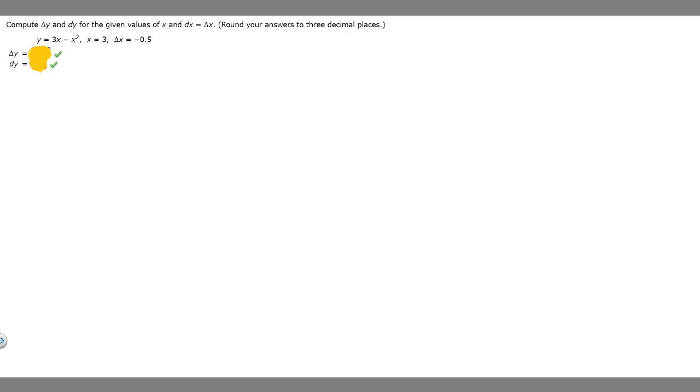We're given that y equals 3x minus x squared, x equals 3, and delta x equals minus 0.5. We're trying to find delta y and dy.